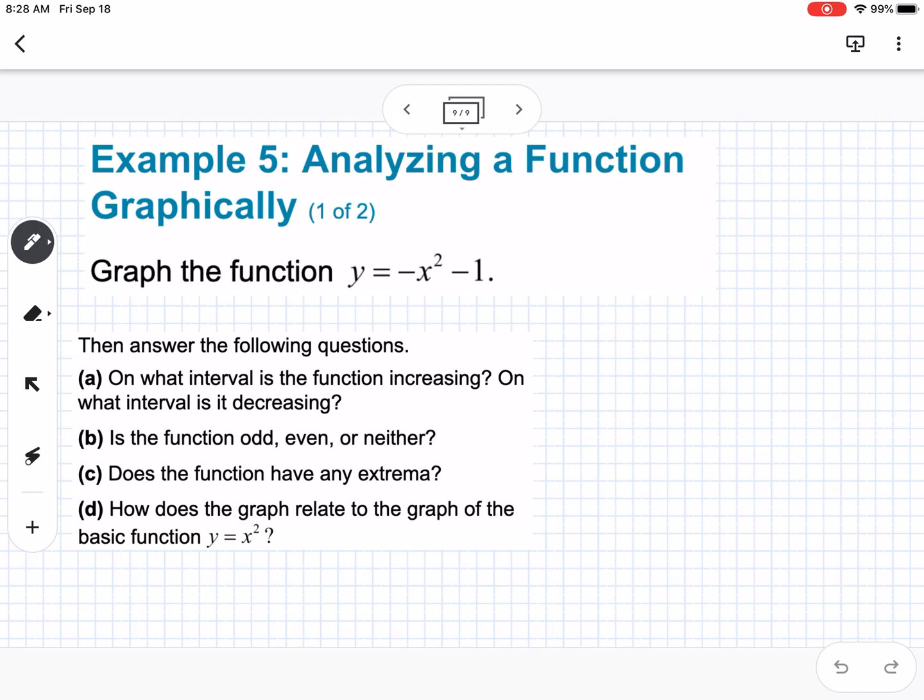The last example: graph the function y = -x² - 1. That means we're shifting it down one and it's going to open down. On what intervals is the function increasing? Using x values, our graph is increasing until we get to x = 0, so it's increasing from (-∞, 0). On what interval is it decreasing? From (0, ∞).